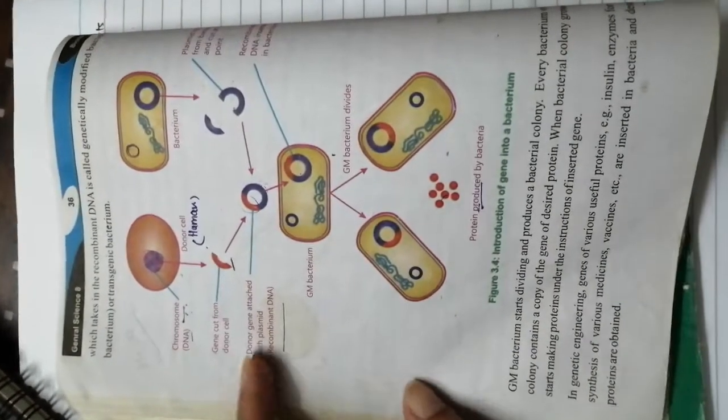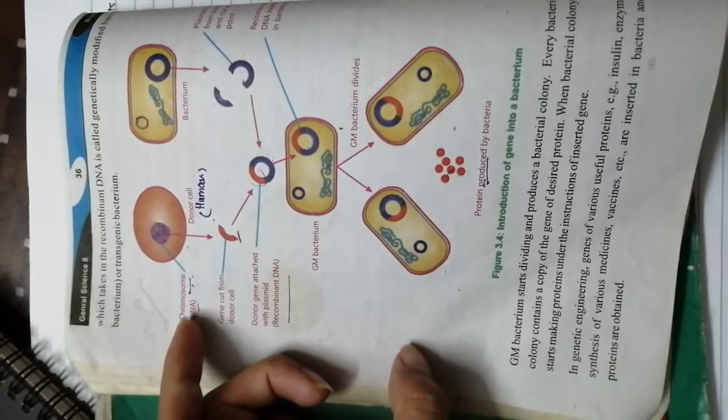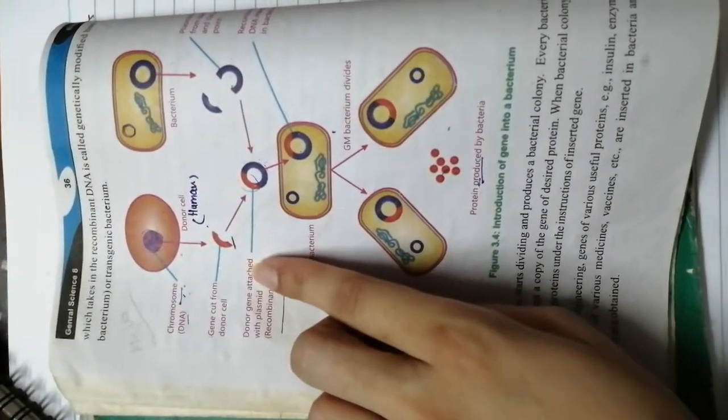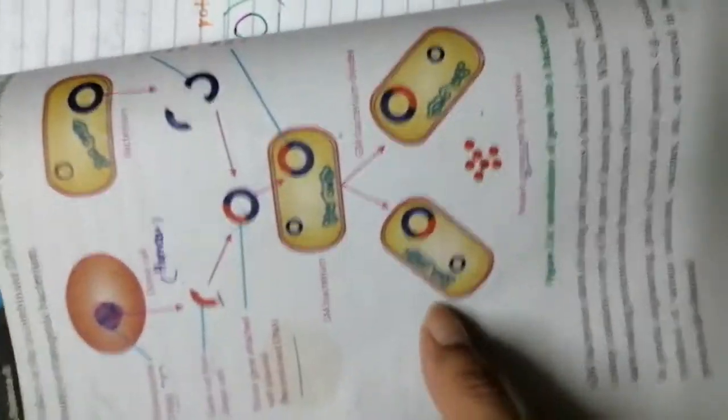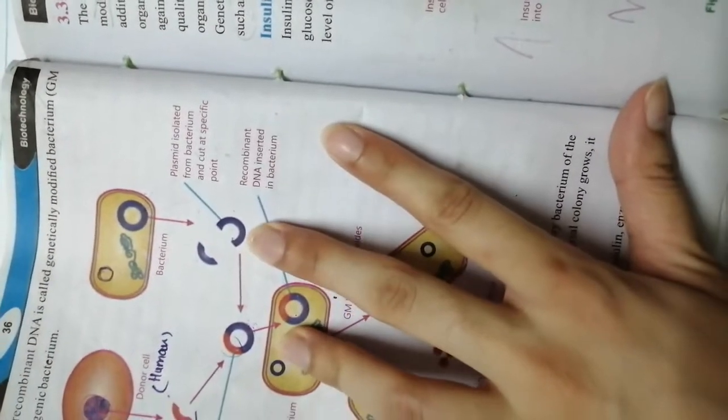The diagram is given on page 36. Again, we are going to isolate a chromosome or the donor cell from the human cell and cut the gene out from the donor cell. Then you isolate the plasmid from the bacterial cell and cut at a specific point.